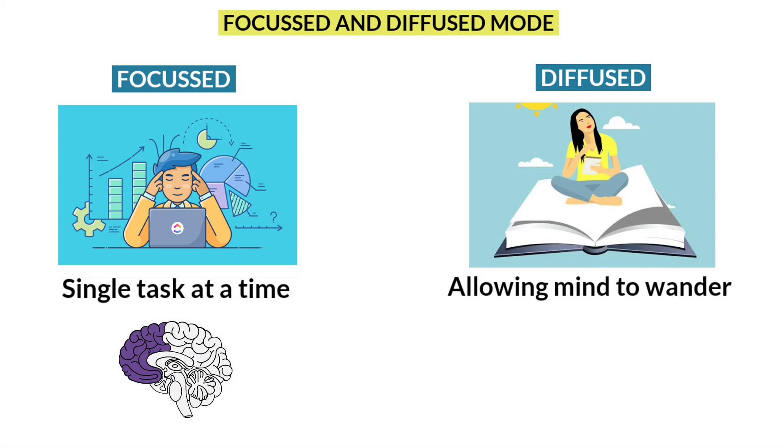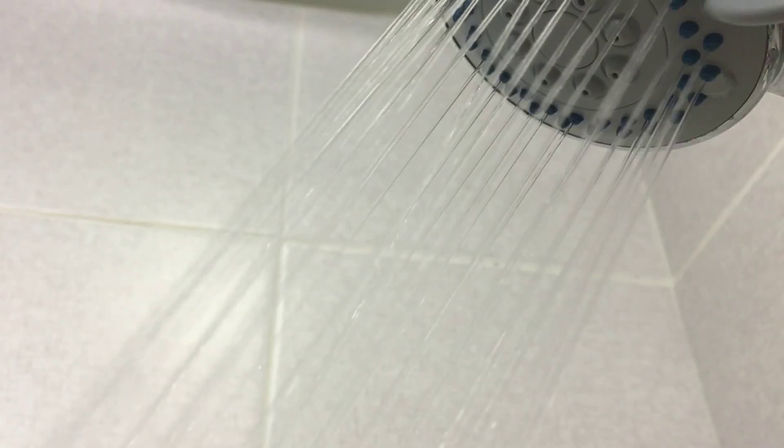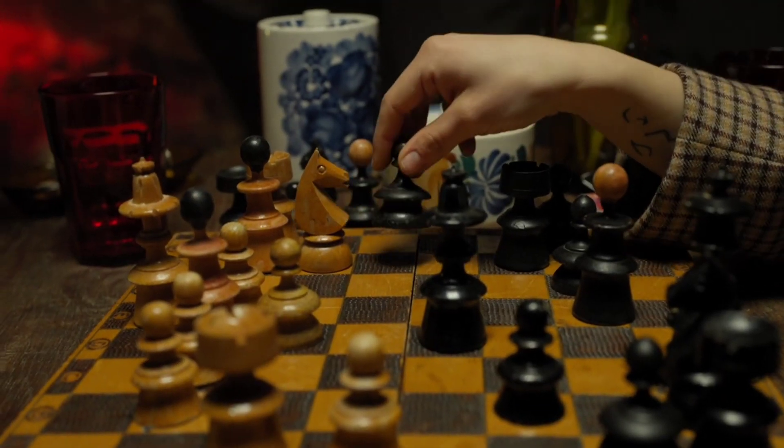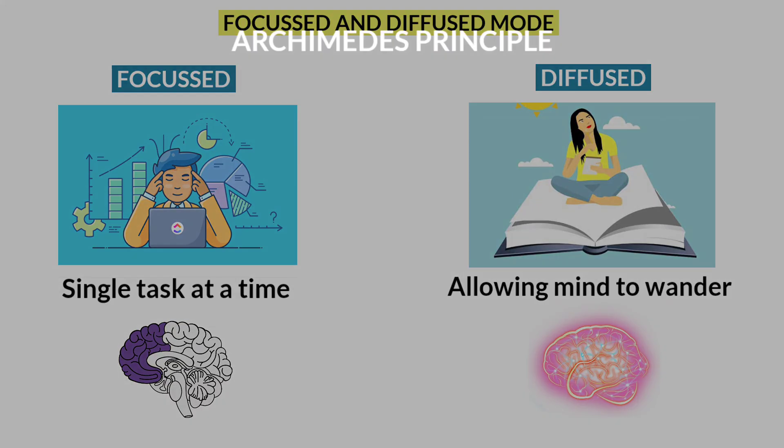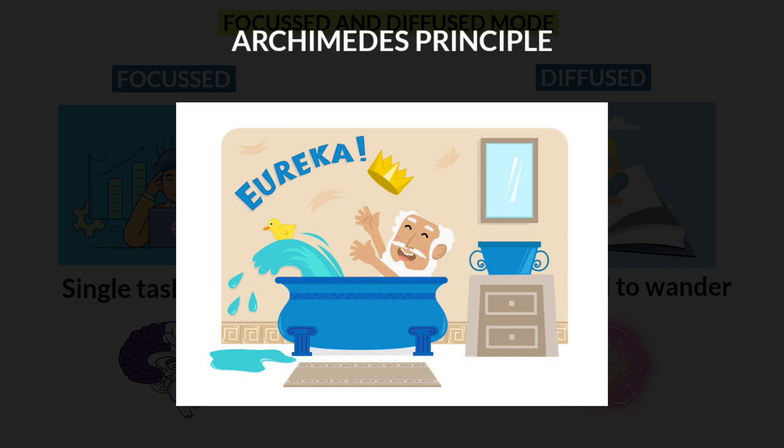Second one is diffuse mode. Diffuse mode is nothing but allowing your mind to wander freely. When you go for a walk or while you are bathing, you use this mode of thinking. While you are using diffuse mode, all areas in your brain are activated. And this is the reason you get lots of creative ideas in this mode of thinking. This is the reason behind the discovery of Archimedes principle, because Archimedes discovered it while taking a bath in a tub.